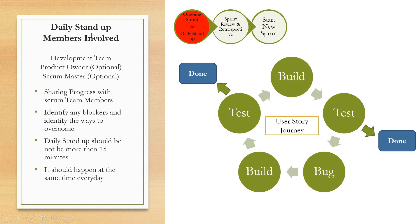Every day there is a meeting called the daily stand-up. Members involved are the development team; the product owner and scrum master are optional and not mandatory unless required. The objectives of the daily stand-up are: team members share their work progress with other members; identify any blockers and the ways to overcome them. The daily stand-up should be no more than 15 minutes and should happen at the same time every day.